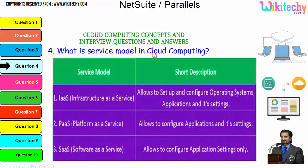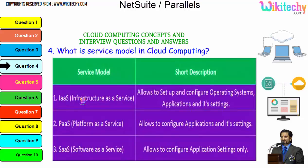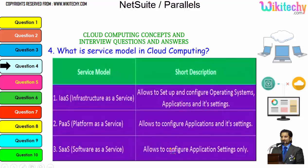The question is: what is the service model in cloud computing? The three major service models are: first, Infrastructure as a Service — allows you to set up and configure the operating system, application, and its settings; you will be given a server and can put whatever operating system and applications you want. Platform as a Service — you will be allocated a specified operating system and can put any applications and settings. Software as a Service — you will be given a software and can do whatever application settings you want.